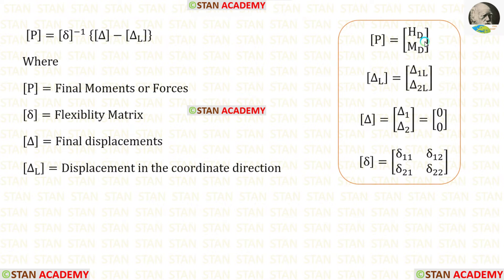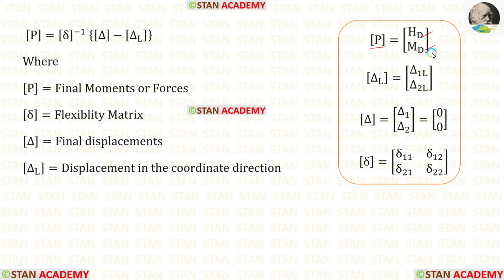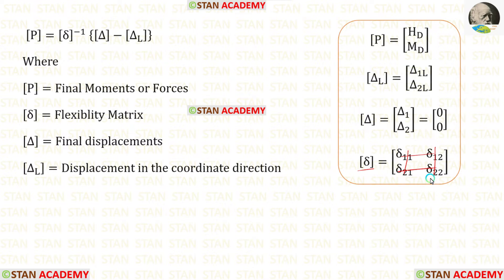The formula to find Hd and Md is: P matrix equals delta matrix inverse multiplied by (delta matrix minus delta L matrix). Inside the P matrix we will have Hd and Md. Since there is no displacement at point D, the values of delta 1 and delta 2 inside the delta matrix will be 0. The size of the delta matrix will be 2×2 because we have 2 coordinates. Now we are going to find the delta L matrix and delta matrix using the unit load method.